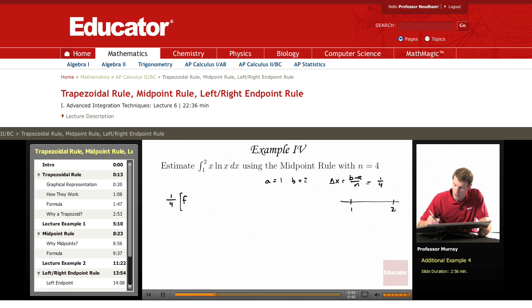So if we take the interval from 1 to 2, split it into four pieces, that's 1 and 1/4, 1 and 1/2, 1 and 3/4.